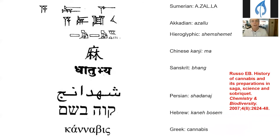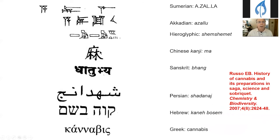This is a representation of cannabis in various ancient languages, dating from the Sumerian and Akkadian some 4,000 years ago, also in Egyptian hieroglyphics. A very recognizable one is the Chinese character, representing stocks of hemp drying in a shed, which would be recognized anywhere in China. We also have the more familiar Greek 'cannabis,' which went directly to Latin, and from the Hebrew 'cannabosum,' meaning aromatic cane.